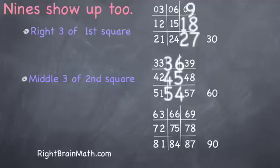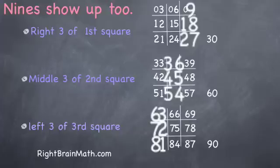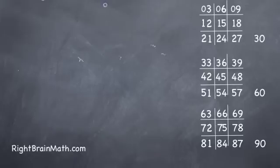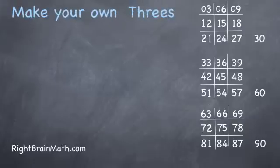And in the left column of the third square, sixty-three, seventy-two, and eighty-one. And those are our nines in that simple pattern. Now whenever you want, grab a pencil and make the threes on tic-tac-toe squares down to thirty, sixty, ninety, or more.